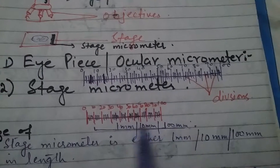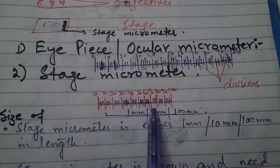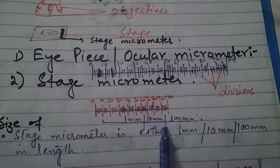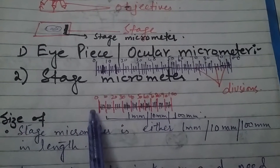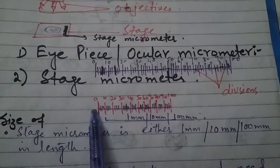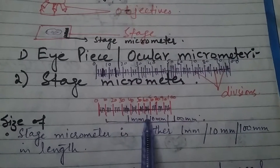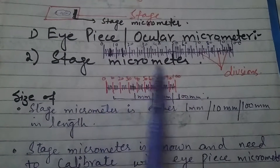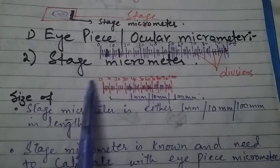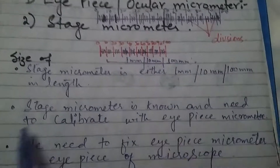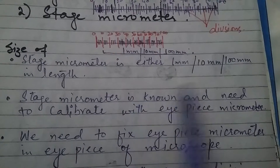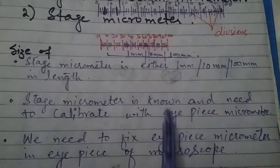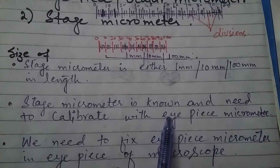The stage micrometer may have 100 divisions. The length of the stage micrometer is either 1 millimeter or 10 millimeter or even 100 millimeter. The stage micrometer is a known scale, and we use it to calibrate the eyepiece micrometer — we compute the alignment of the eyepiece micrometer divisions against the stage micrometer.